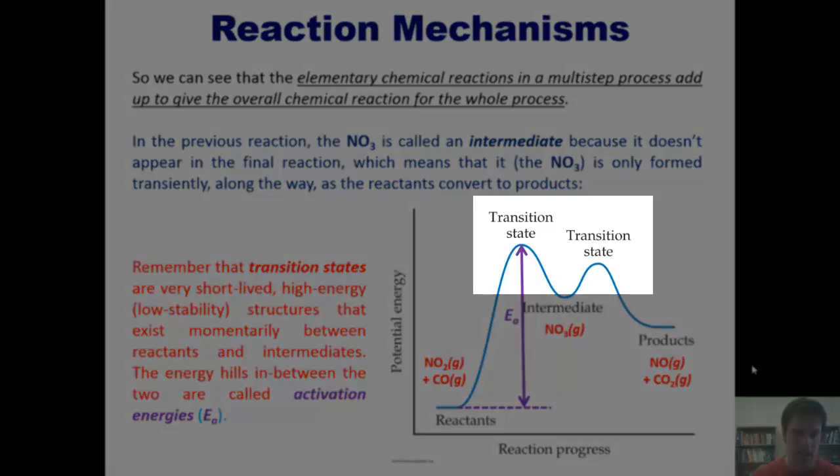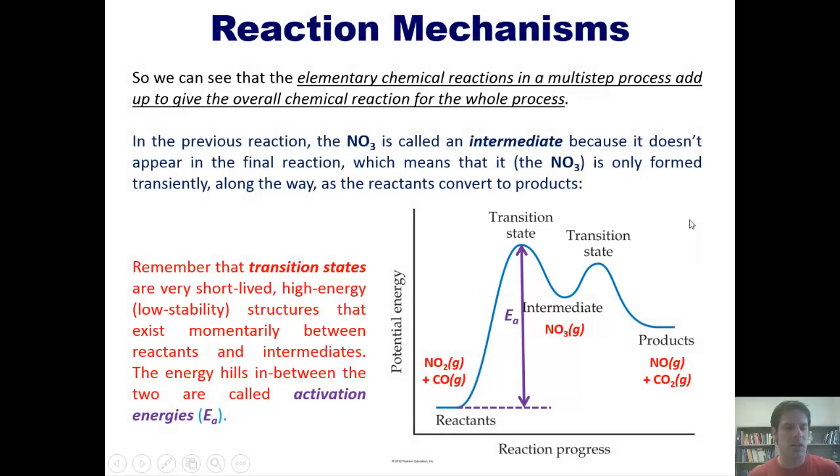Remember that transition states are very short-lived high energy or low stability structures that exist momentarily between reactants and intermediates. The energy hills, these peaks here on top of the hills, that are in between the valleys, are where the transition states lie. Now, the height of those hills are called the activation energies, or E sub A, for which there is one right here and one right here.